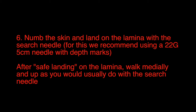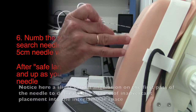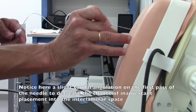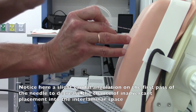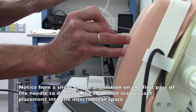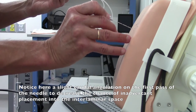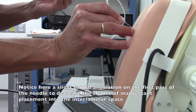Step 6: Numb the skin and land on the lamina with the search needle. We recommend using a 22 gauge, 5 cm needle with depth marks. After safe landing on the lamina, walk medially and up as you would usually do with the search needle. Notice a slight caudal angulation on the first pass of the needle to decrease the chance of inadvertent placement into the interlaminar space.